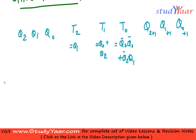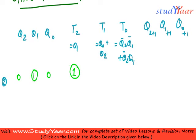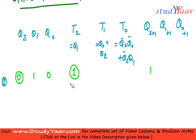Now let's look at unused state 2. State 2 is 0-1-0. What is T2? T2 is Q1, so Q1 is 1, meaning T2 is 1. When T2 is 1 and Q2 is 0, Q2-next is going to toggle — so Q2-next becomes 1.